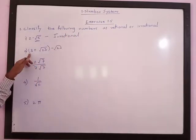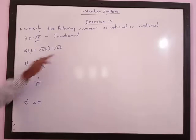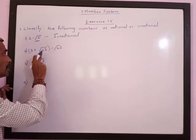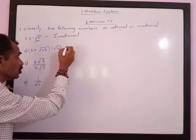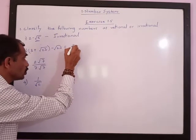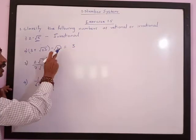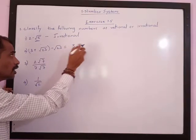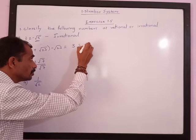Here it is 3 plus root 23 minus root 23. Individually, root 23 is an irrational number. But this is 3 plus root 23 minus root 23, so root 23 cancels with minus root 23. This equals 3, which means this is a rational number.